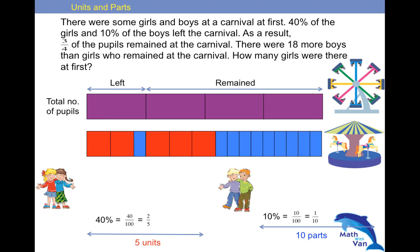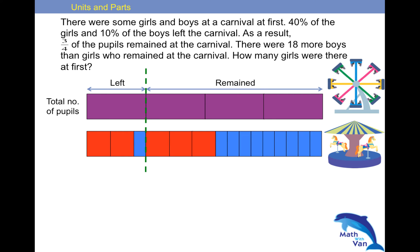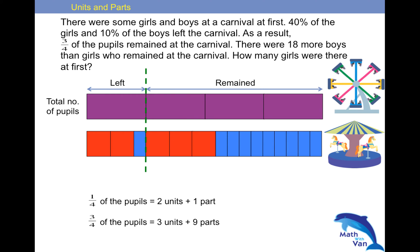You may ask, what's next? We have to find the relationship between the units and parts so that we can express everything either in terms of units or all in terms of parts. We were told that 1 quarter of pupils is 2 units plus 1 part. Alternatively, the remaining 3 quarters of the pupils is 3 units plus 9 parts.